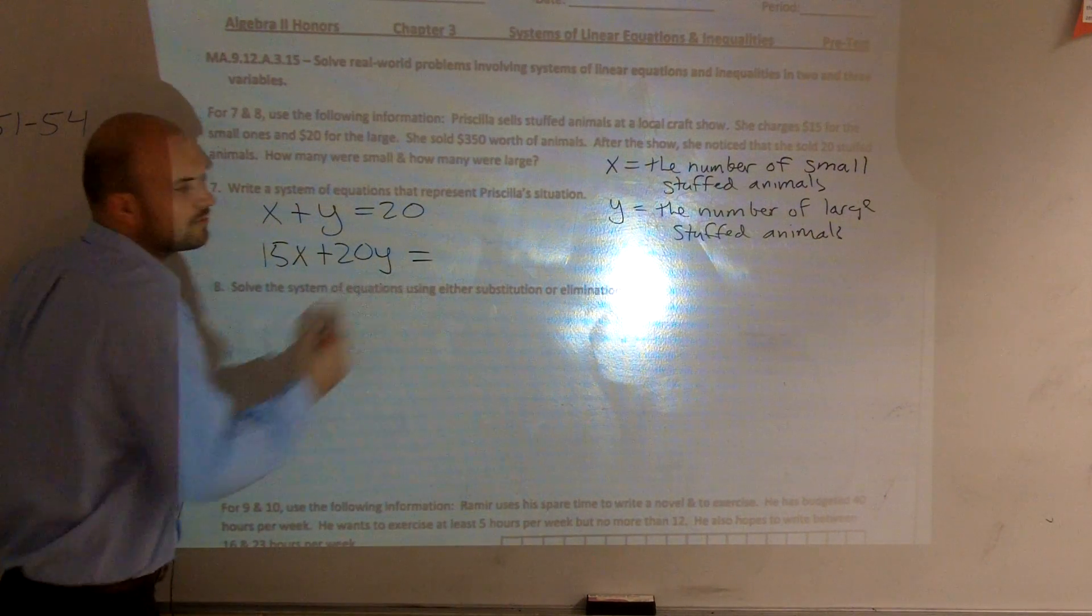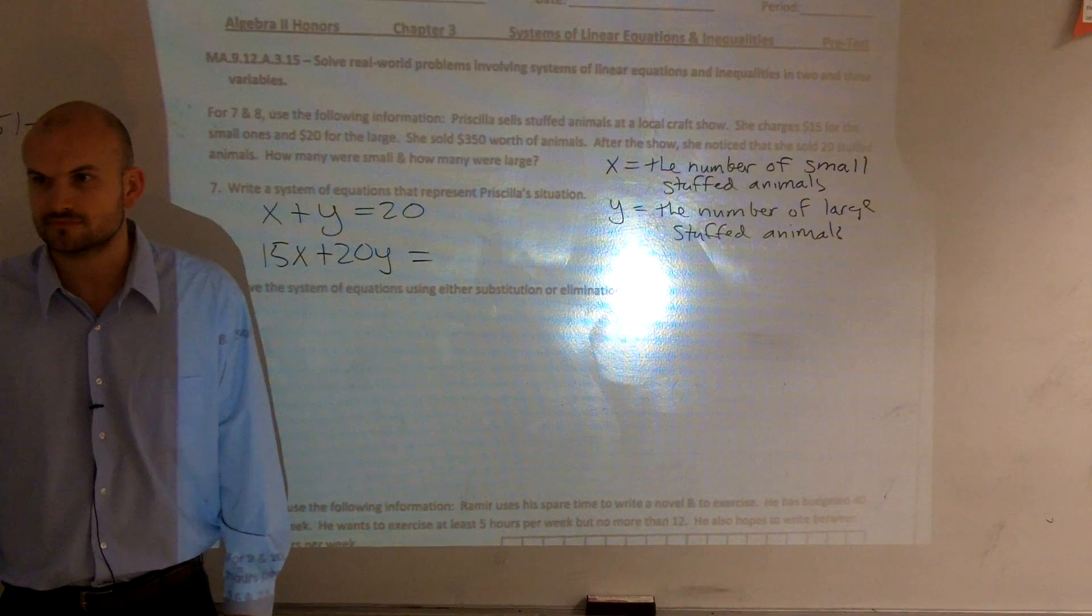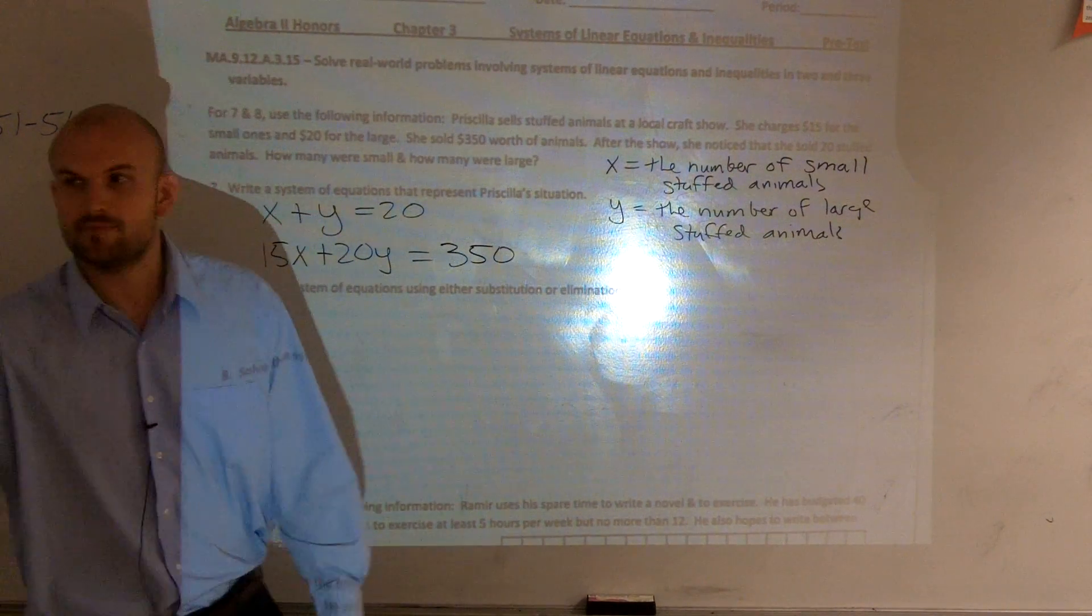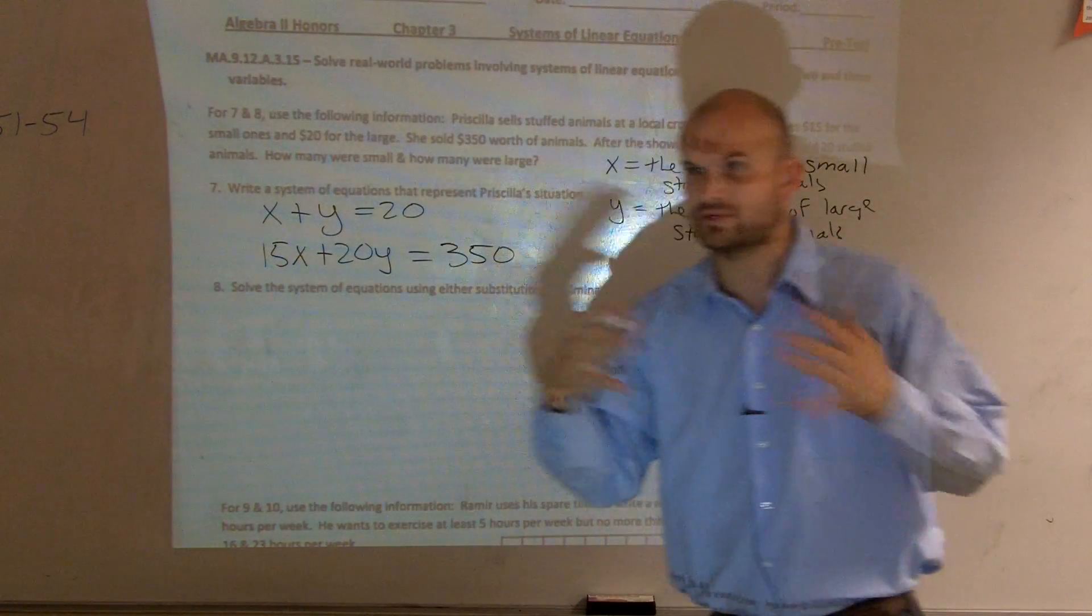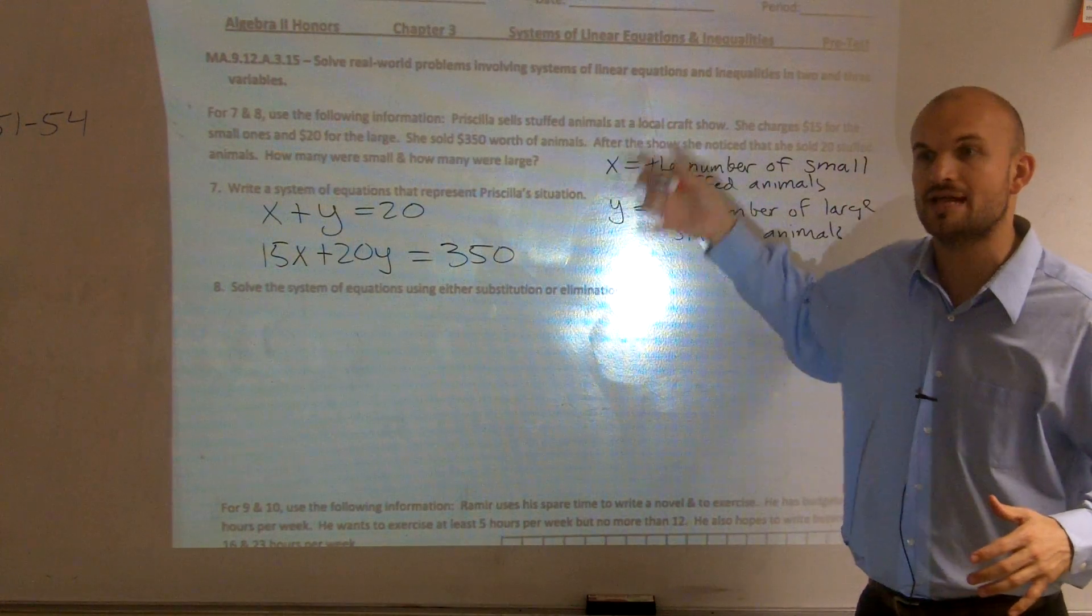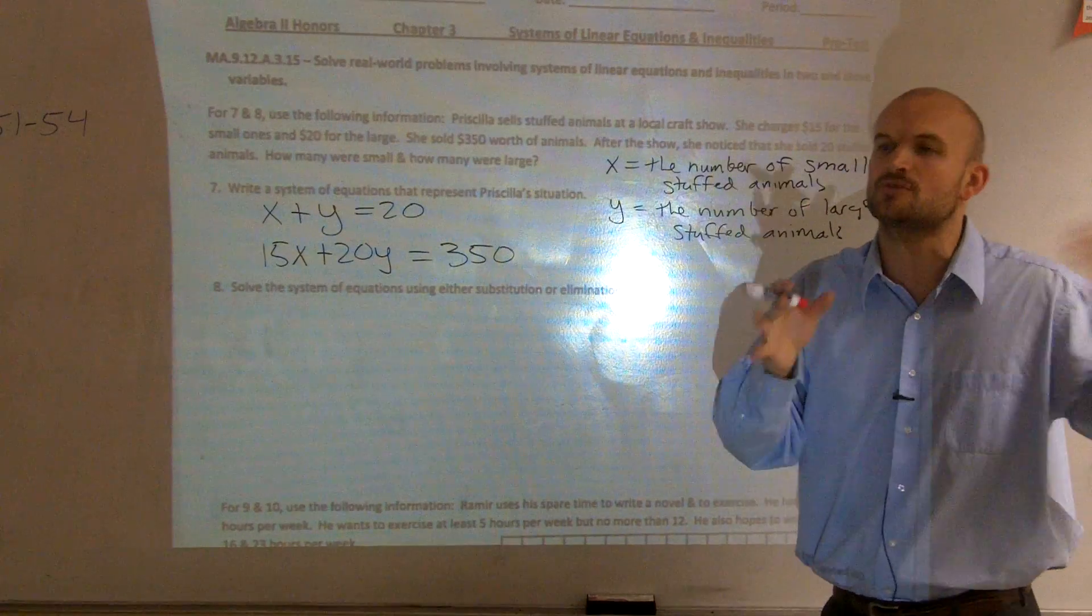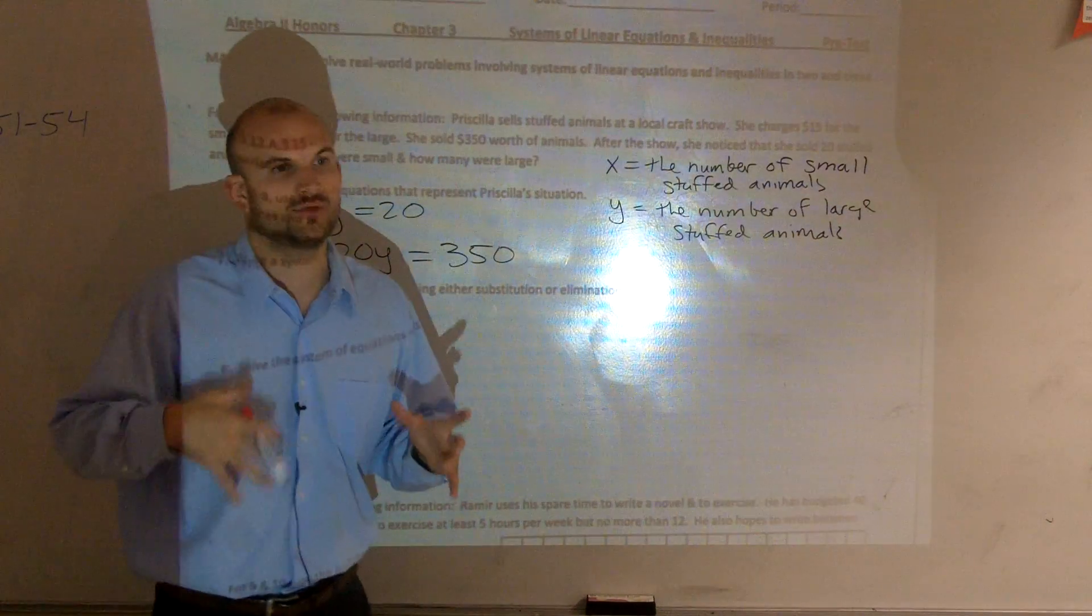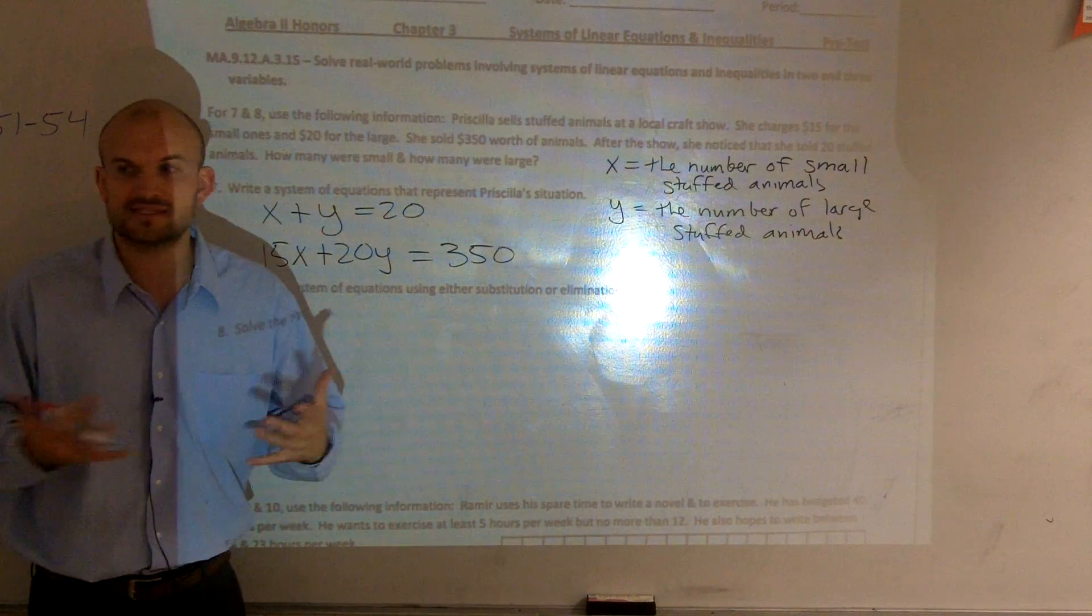But this amount equals how much did you make? 350. Now, the main important thing, now that you kind of know what we're talking about, two variables, you know you're going to have to do two equations. You just want to separate that out. Because one is talking about numbers and the other one is talking about cost.